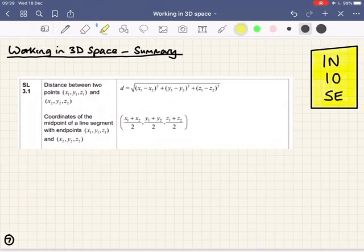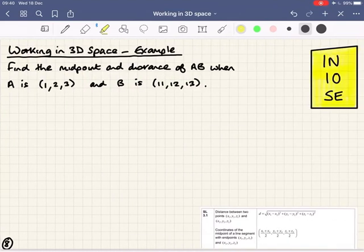So nothing majorly different than working in two dimensions. The formula is just an extension of that. And indeed, here are the formulae on the formula booklet under SL 3.1. The distance between two points x1, y1, z1 and x2, y2, z2 is given to us. There is that formula, that's the one we just used. And then for the midpoint of a line segment in three dimensions, it's just the mean of each of the coordinates for x, y, and z. So not very complicated.